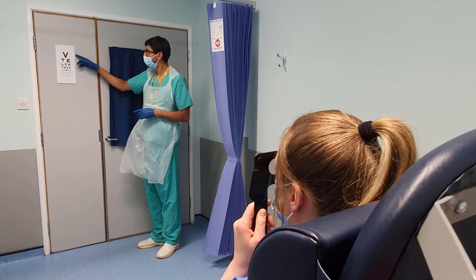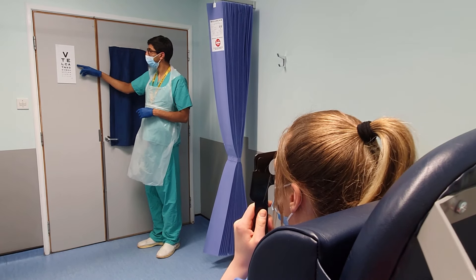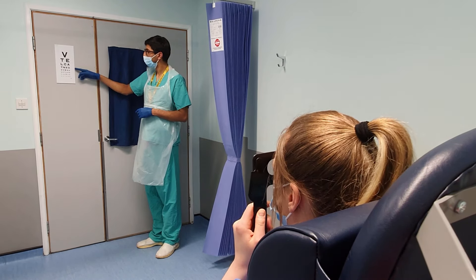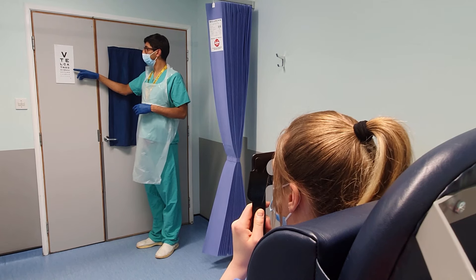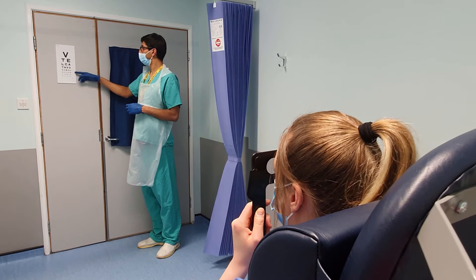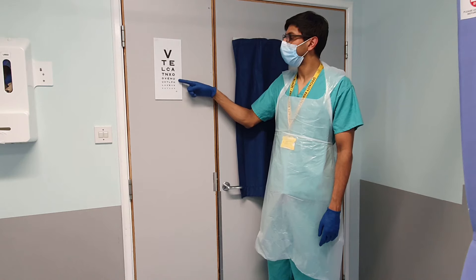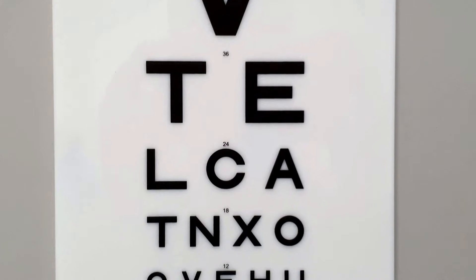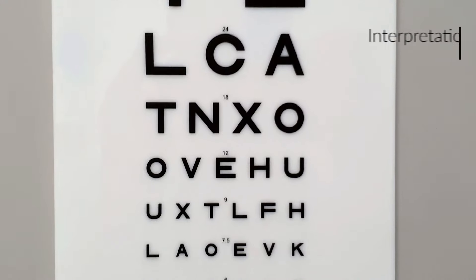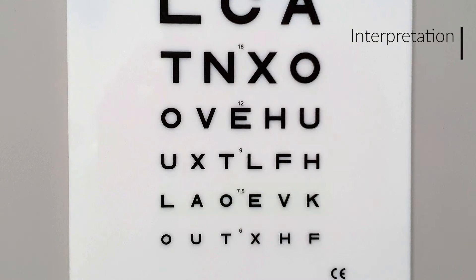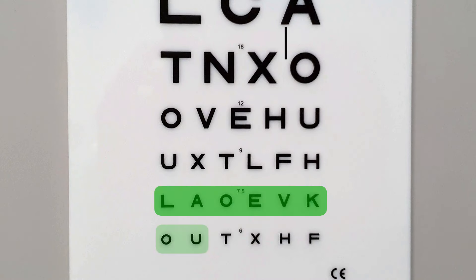Ask the patient to read down the chart starting from the top. You can point to the letters to guide them if appropriate. When they start to struggle, it's important to encourage the patient to try their best but not to guess the letters. In this case, the patient is correctly reading the line 6/7.5, as shown here, plus two extra letters on the line 6/6. This can be documented as 6/7.5 +2, as two letters are read on the line below.